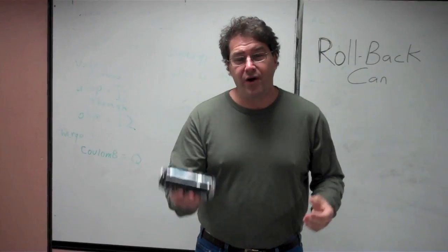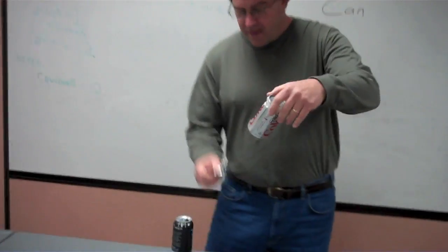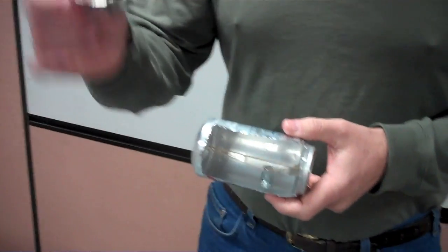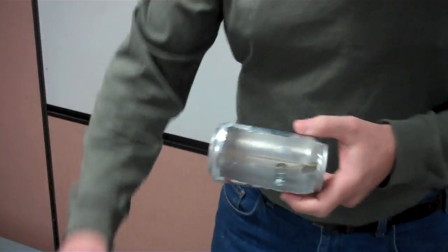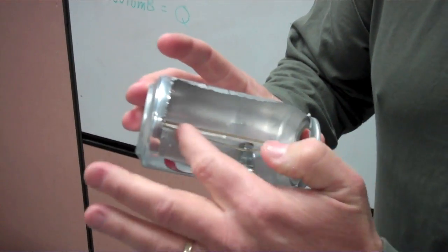So, to show you how your energy can or roll-back can works, I made a cutaway. In this one, I actually cut the aluminum siding off of this can. You shouldn't do this because this is actually very sharp, but inside of your energy can, you can see the weight's about in the middle or so. It's dangling down.